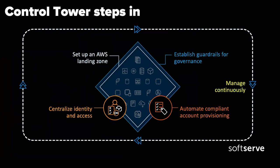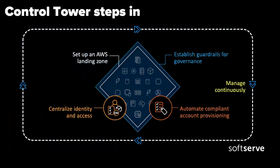This new tool is the Control Tower. Control Tower has four main points: first, it can help you set up an AWS landing zone; second, it creates guardrails for governance so you can control what's going on inside your accounts; third, it helps you centralize identity and access management by leveraging SSO; and fourth, it helps you provision your accounts automatically.